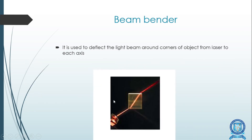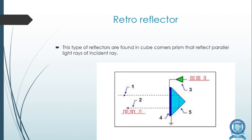The second optical element is the beam bender. From the figure we can see clearly that the beam bender receives a beam from one area and bends it to another area, directing the light beam around corners of the object from the laser to each axis. The third optical element is the retro reflector, which reflects a beam back parallel to the incoming beam — the beam travels from one point to the retro reflector and is reflected back in the same direction.